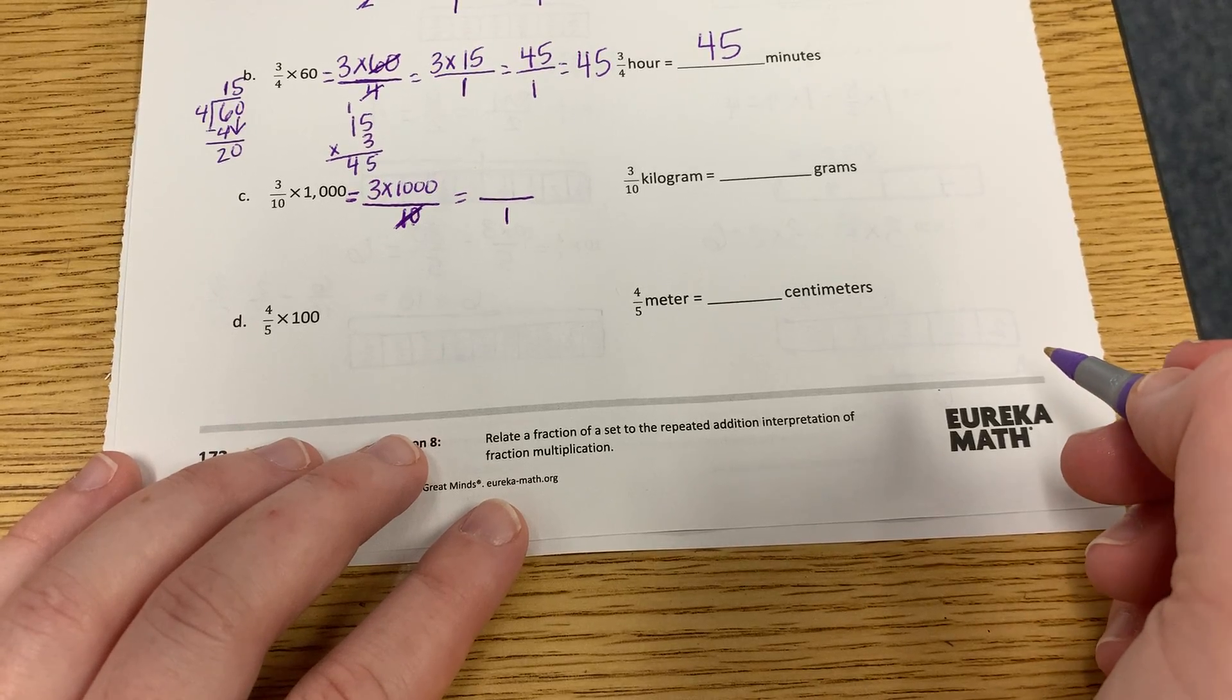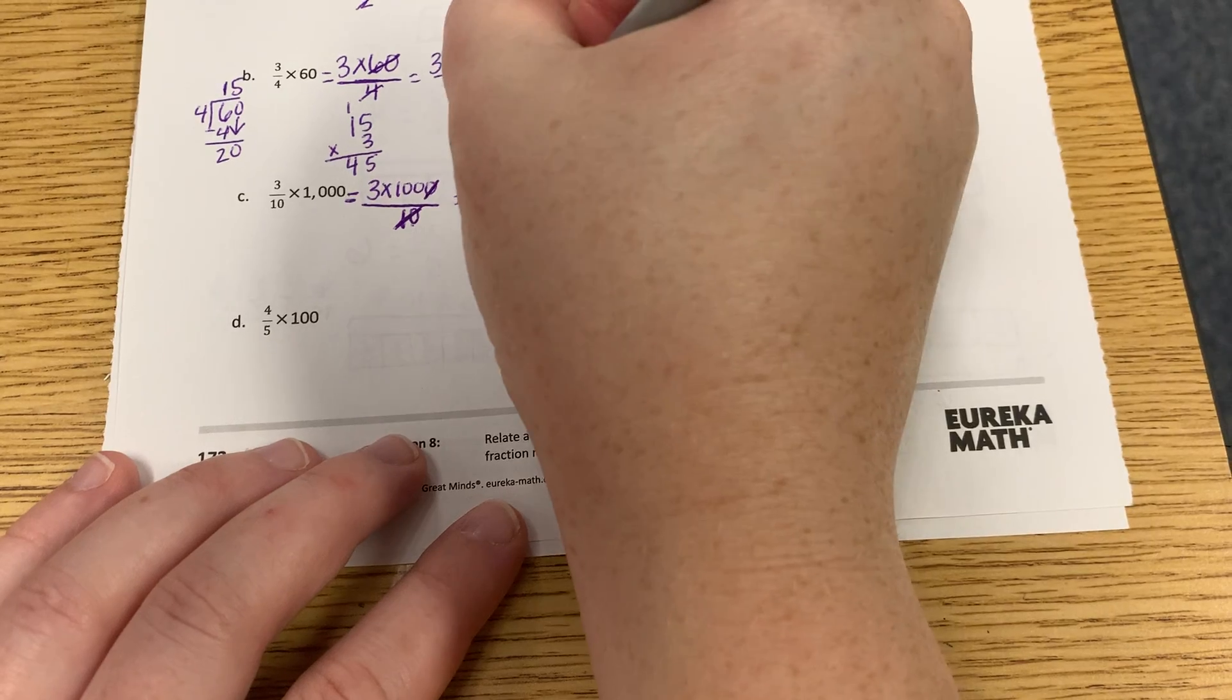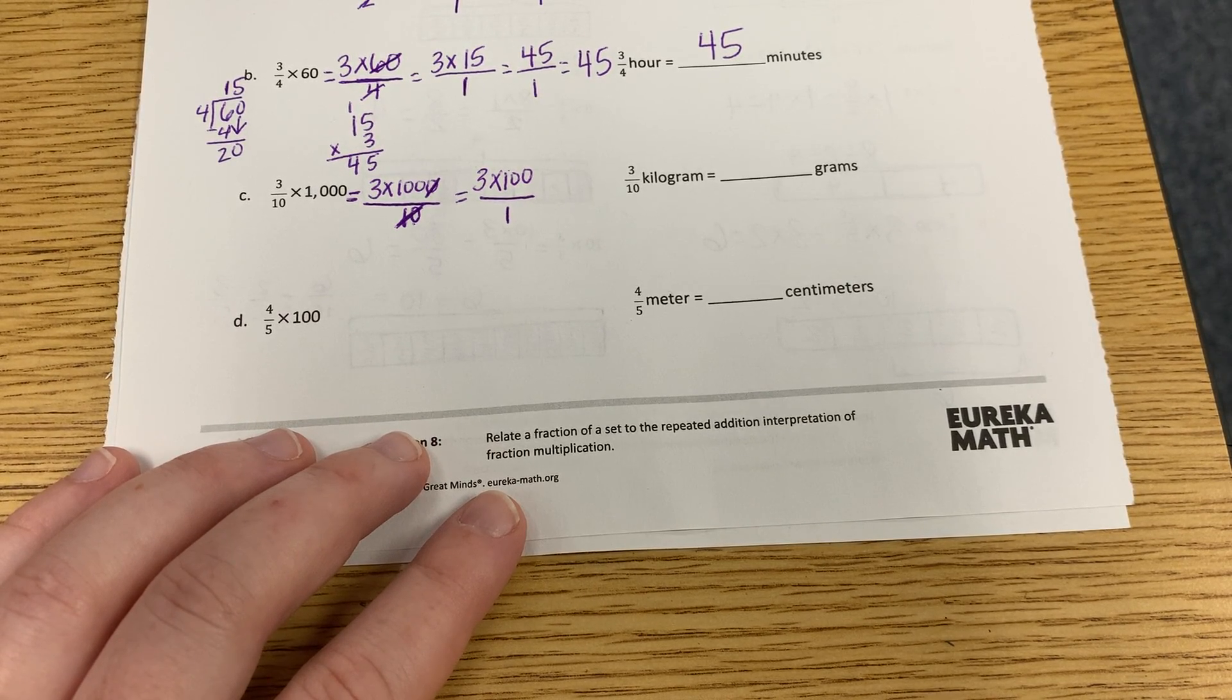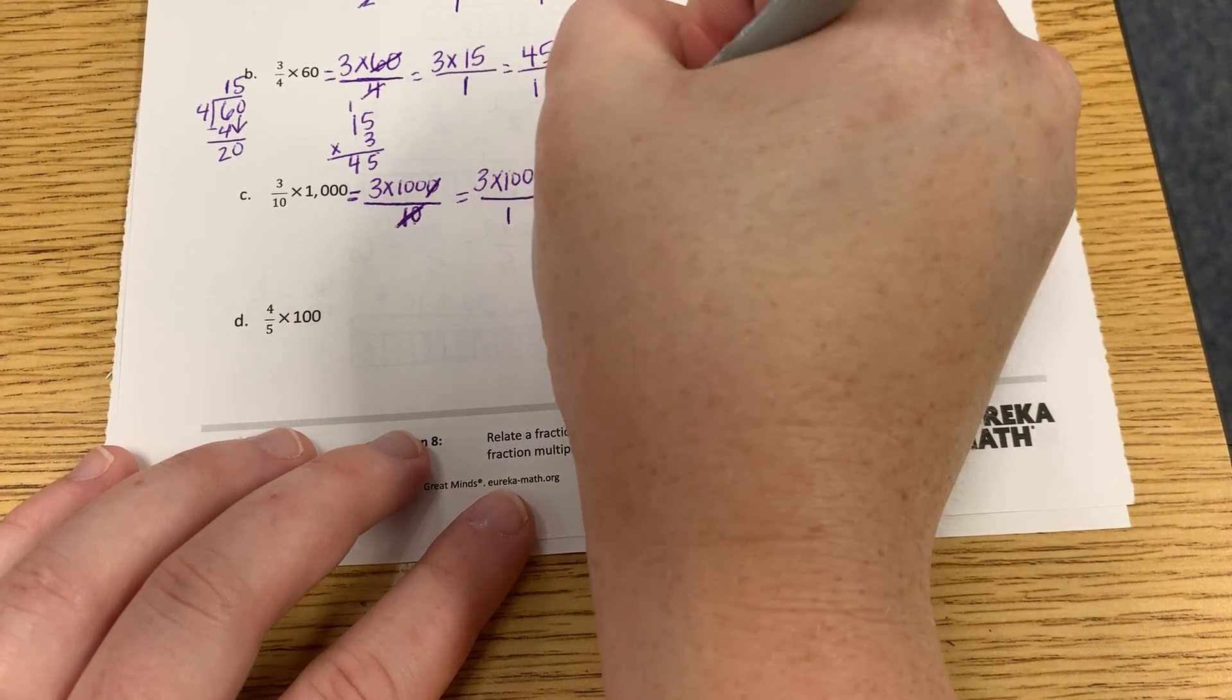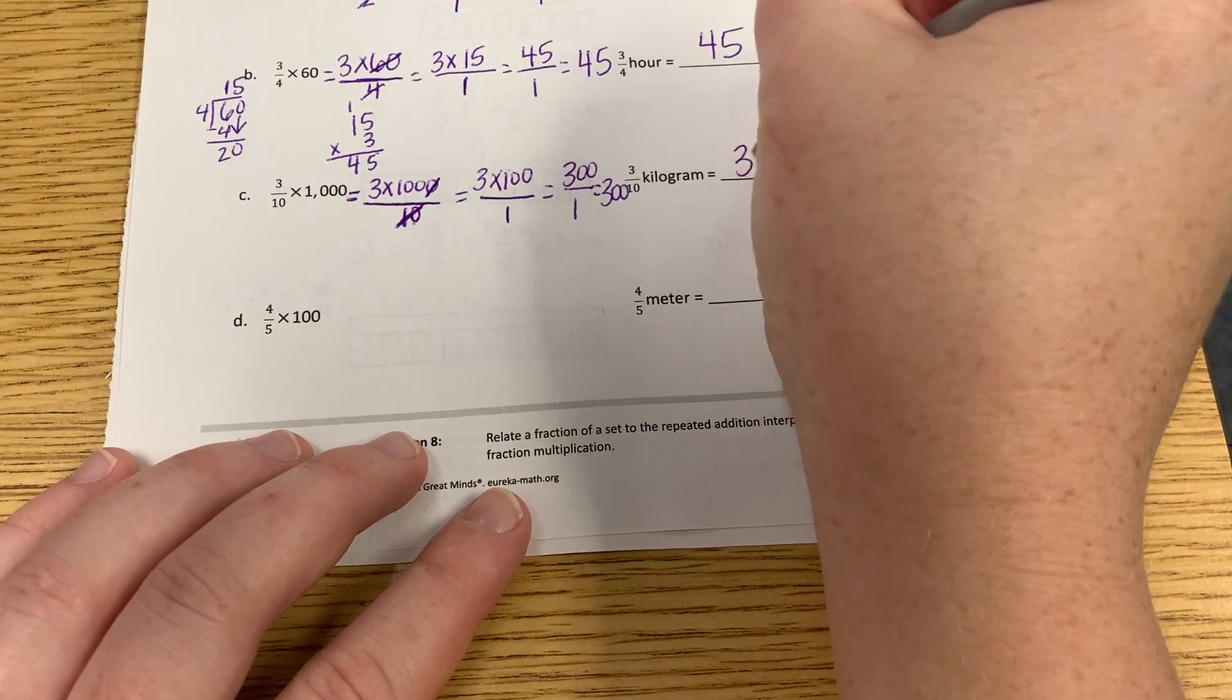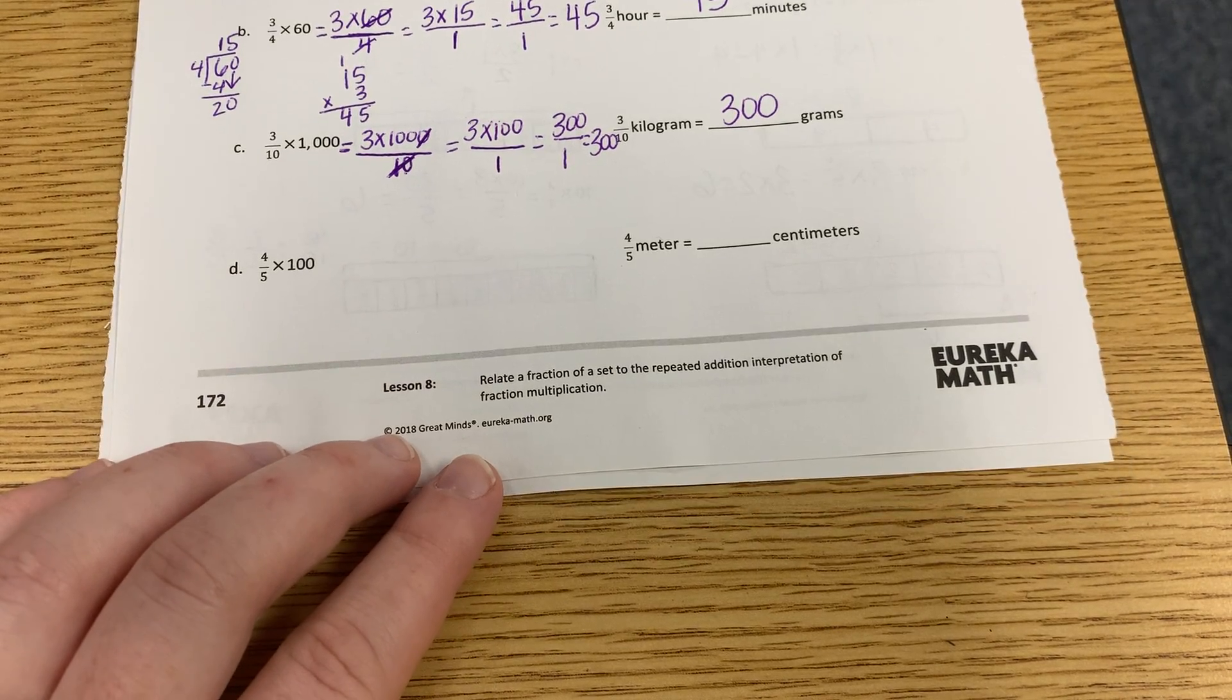And remember, if it's a 10, then on the top, I just need to mark out a what? A 0. So now I have what on top? 3 times what? 100. So 3 times 100 is? 300. Very good. And 300 over one is the same thing as? 300. So 3 tenths of a kilogram is how many grams? 300. Everybody with me?